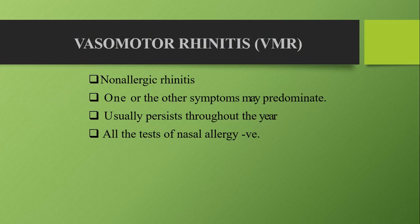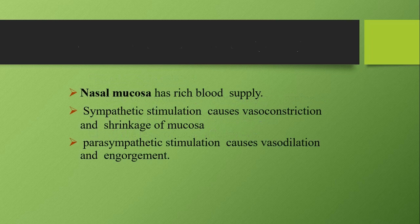So we have established that this is non-allergic rhinitis. Before we discuss the pathogenesis of vasomotor rhinitis, I would like you to recall the effects of autonomic nervous stimulation on blood vessels. Sympathetic stimulation causes vasoconstriction of blood vessels, leading to shrinkage of the mucosa, whereas parasympathetic stimulation causes vasodilation and resultant engorgement of the blood vessels.